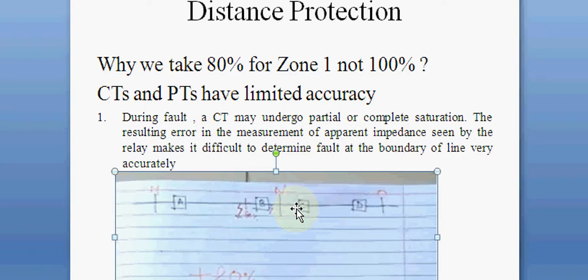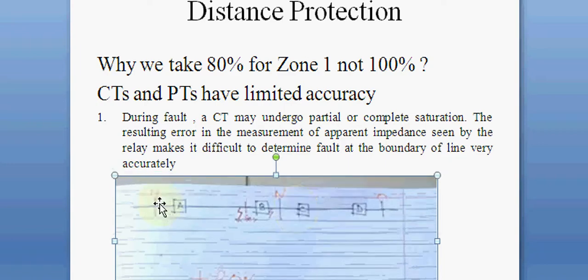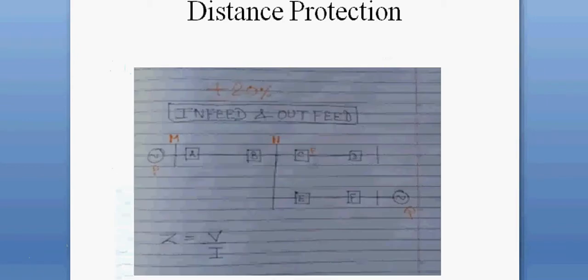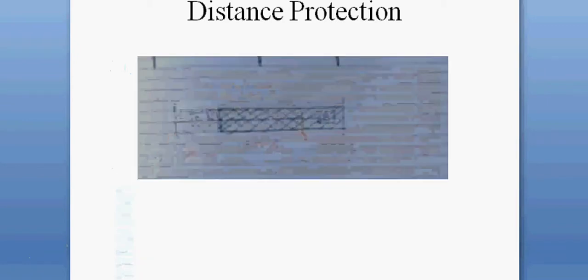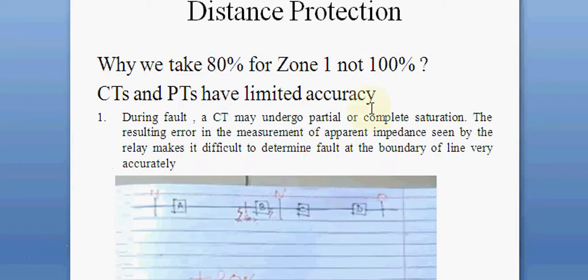Another reason for keeping Zone 1 at 80% is that when deriving the torque equation or the mathematical equation for the relay, we do not compensate for the effect of capacitance or transposition of the line. These effects will affect the measurement in practice, so we keep Zone 1 only up to 80% of the line.